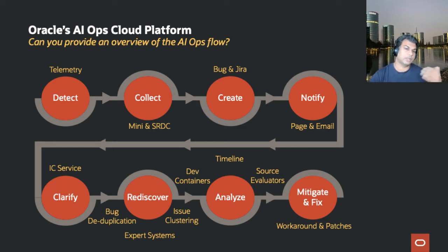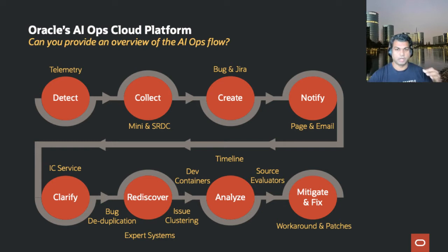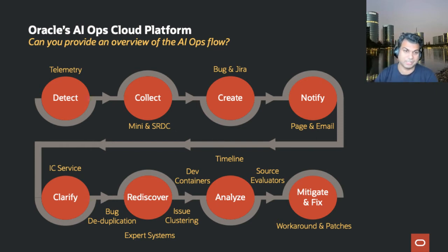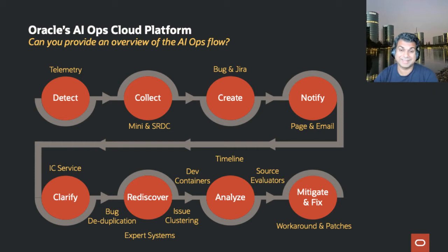We try to clarify which are the actual issues to look at. For example, you can have 20 different asserts that happen inside the database, but you only want to look at issue number 15. That process is called clarification. Once we clarify something, we have the ability to rediscover — we see more than 80 to 85% of the issues in our cloud are ones we've already seen, with existing fixes or automations or standard operating procedures. So we want to take out as many of these issues as possible with automated mitigation in place, without humans having to look at them.